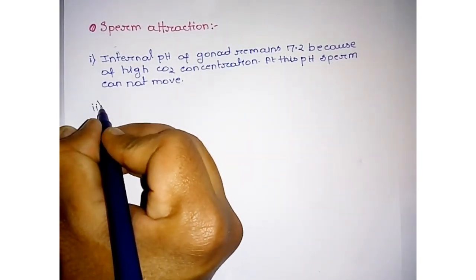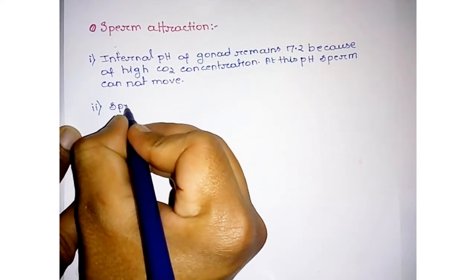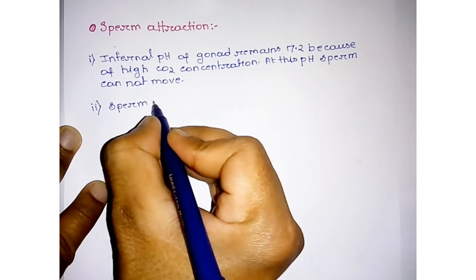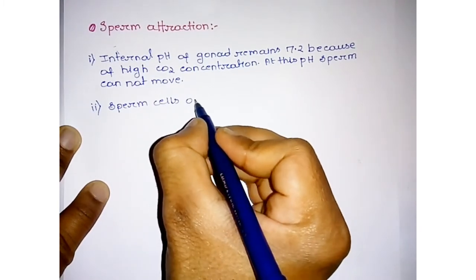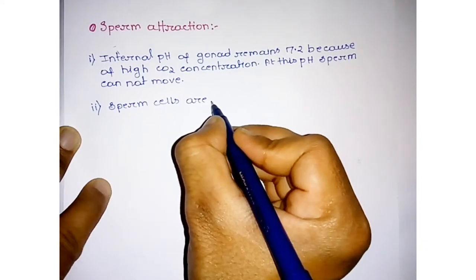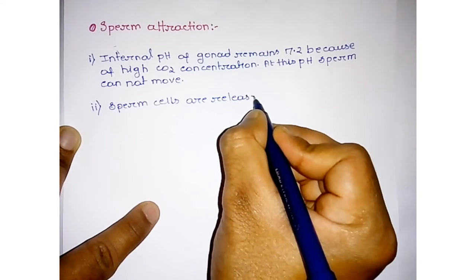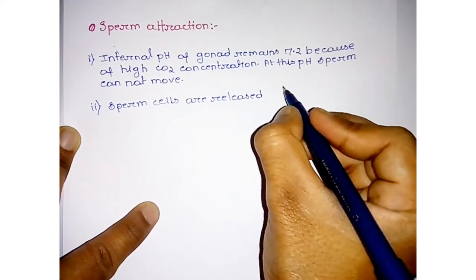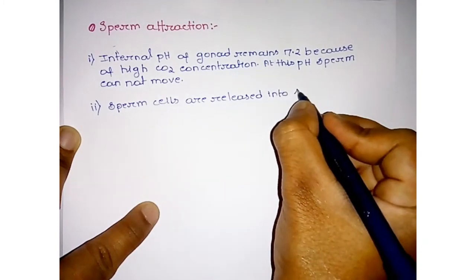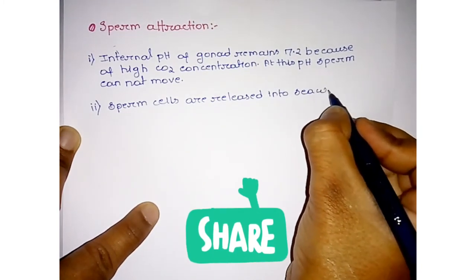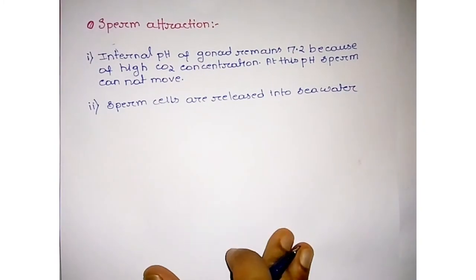Next, sperm cells are released into seawater. Sea urchin sperm cells are released in seawater.